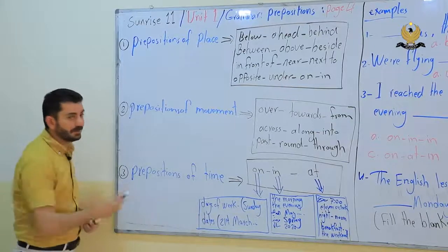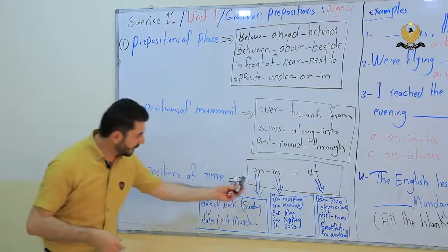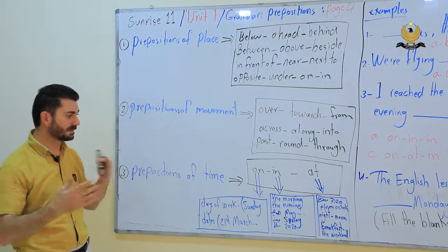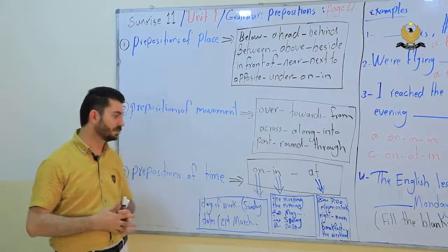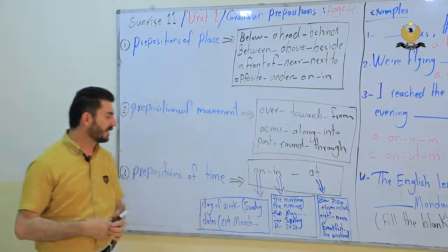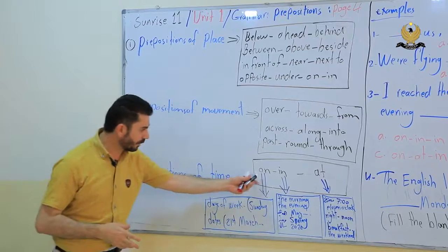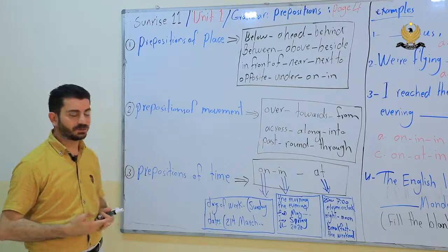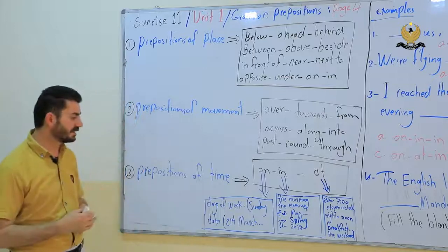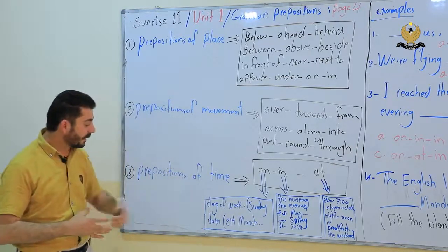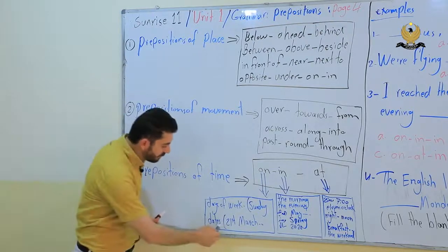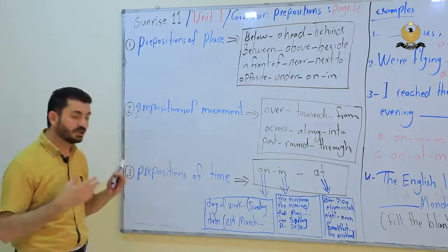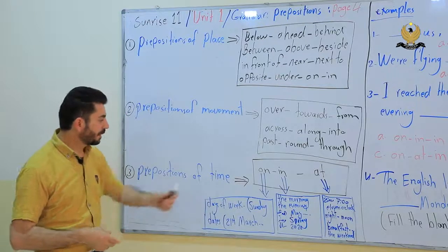And the last are prepositions of time. On, in, at, from, to, between. We use on for days of the week like Saturday, Sunday, Thursday, Friday. On Sunday, on Friday. For dates, we are talking about the 21st of March.